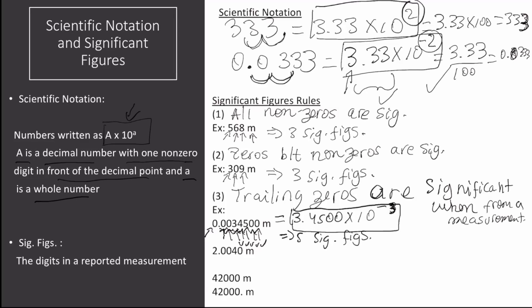The next example: we have 2.0040 meters. The first digit is significant because it is from a measurement and is non-zero. The next two zeros are significant because they are in between two non-zero digits. The fourth digit is significant because it is non-zero. And the last zero is from a measurement, so it is also significant. So we have five significant figures.